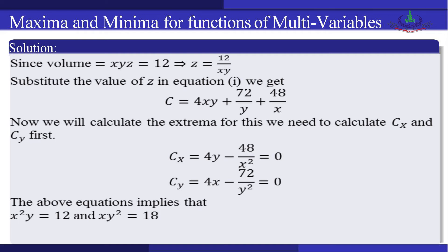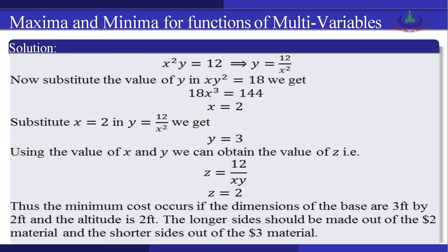From the first equation, y = 12/x². Substituting into xy² = 18, we get 18x³ = 144, so x = 2. Substituting x = 2 back into y = 12/x², we get y = 12/4 = 3.